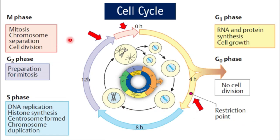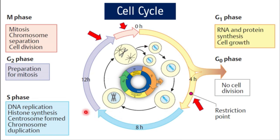G2 phase, or gap 2, is the interval between chromosome duplication and the beginning of mitosis. During this time the cell may grow, usually less than during G1, so G2 is shorter than G1. It also synthesizes proteins essential to the subsequent steps of mitosis. Each phase of the cell cycle prepares the cell machinery for the next phase — S phase prepares the cell for G2, and G2 prepares the cell for the mitotic phase.